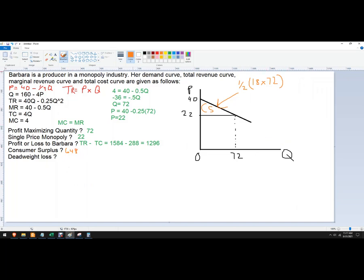Now the deadweight loss is the difference between the competitive market and the monopoly market. So in the competitive market, price is going to equal the marginal cost of production like it is in a perfect competition situation. So this would be actually 4. So now we're going to know that the deadweight loss is this big triangle right here.